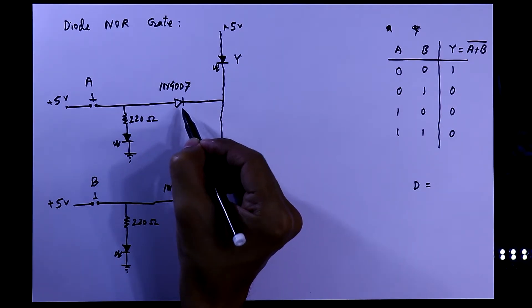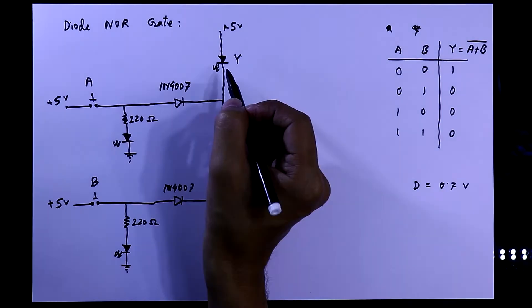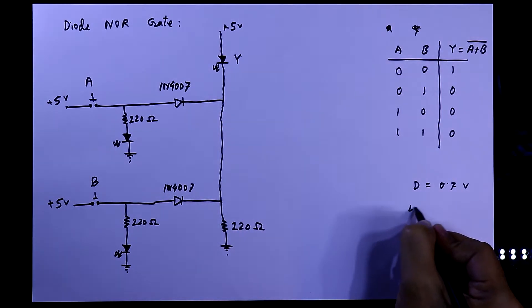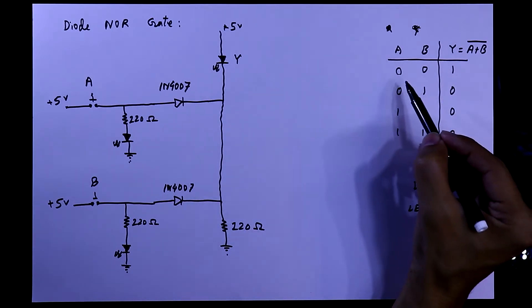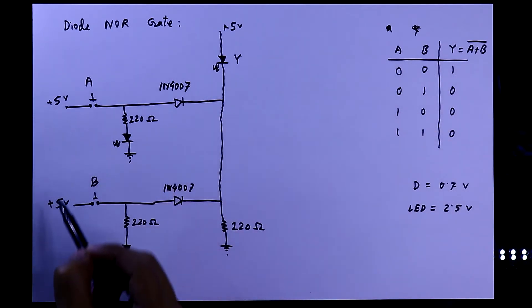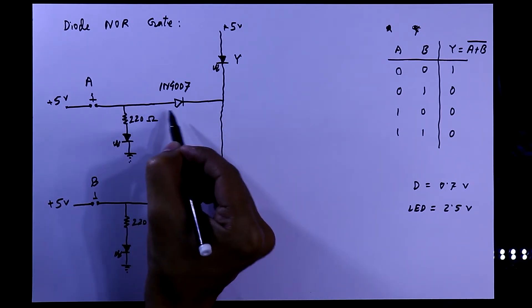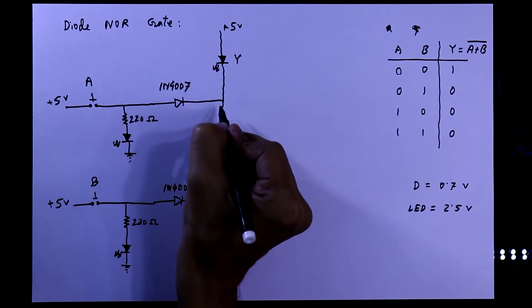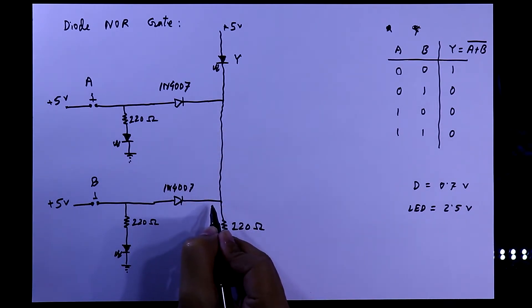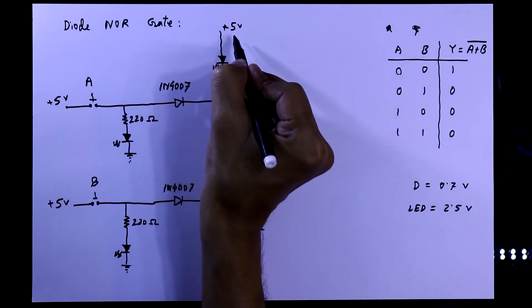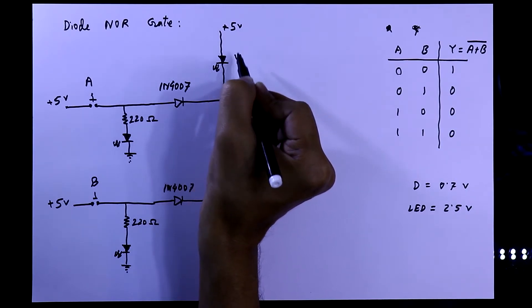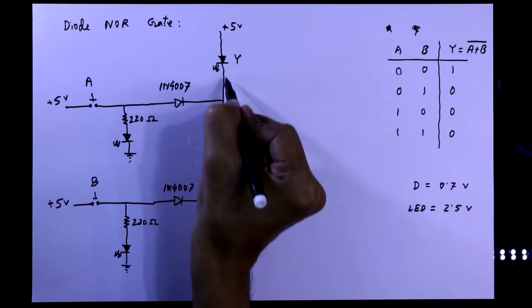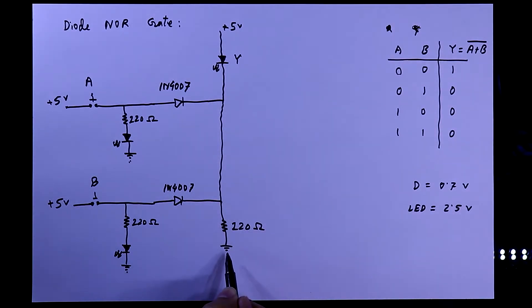This diode has a voltage drop of 0.7V and voltage drop of the LED is at least 2.5V. For the first condition when both are off then no current flow will be there through the diode. So it will be 0V 0V in this position. Here you can see that 5V is connected to the positive pin of the LED. So the only way to flow current from this way through the resistor to the ground.